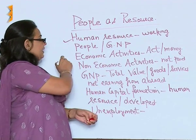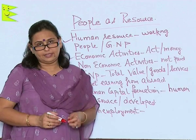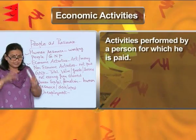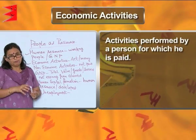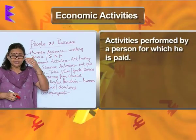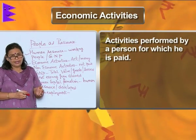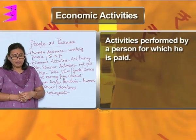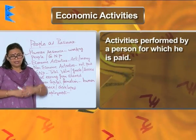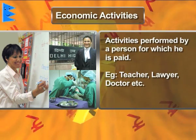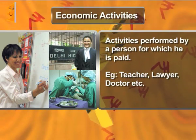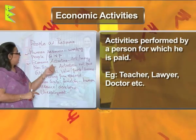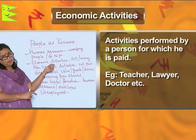Next is economic activities. All the activities that a person performs for which he is paid is called an economic activity. For example, if you go out and work as a teacher, lawyer, professor, or whatever, then you are paid for your work. So it is an economic activity.